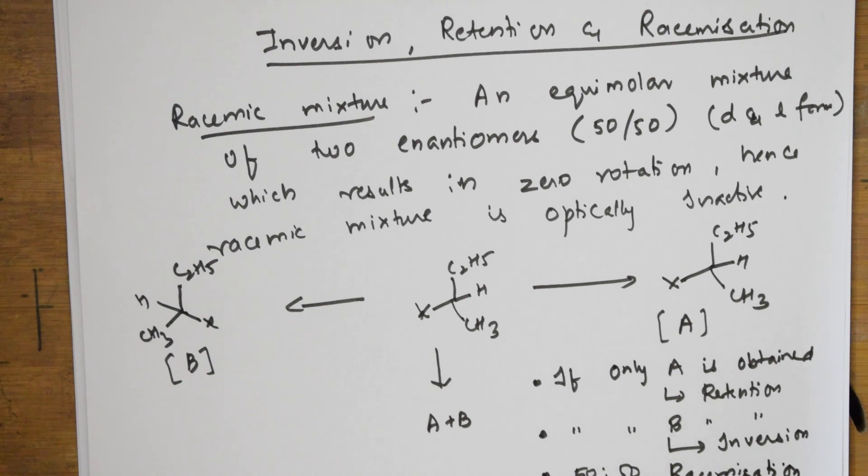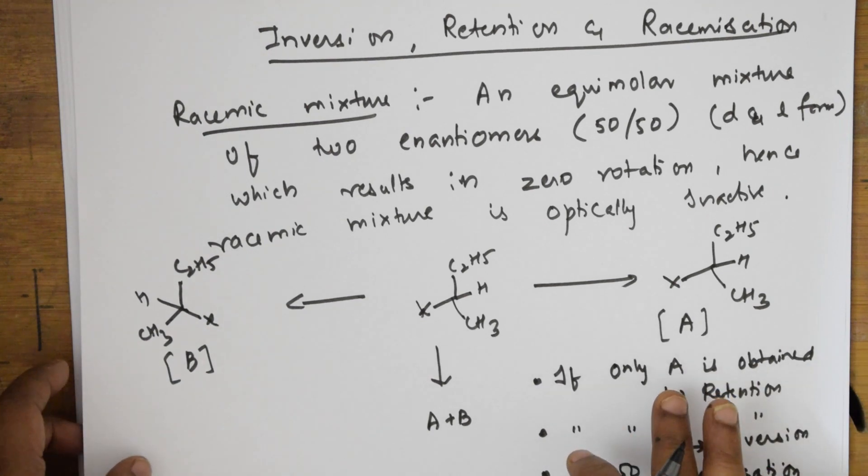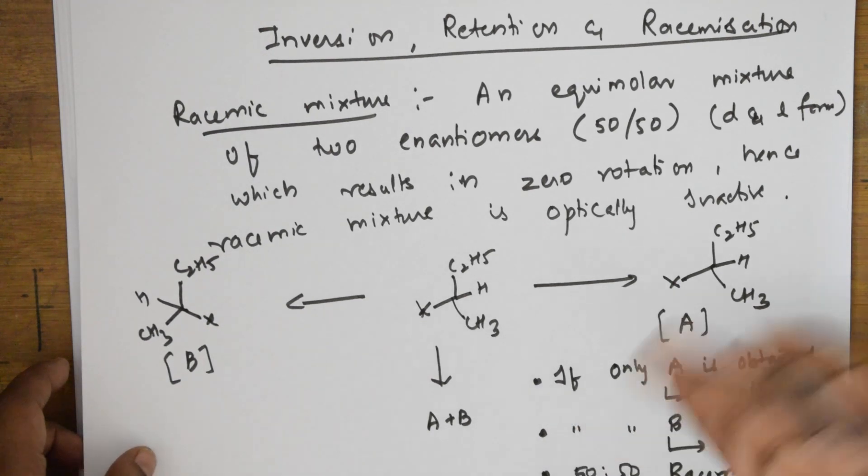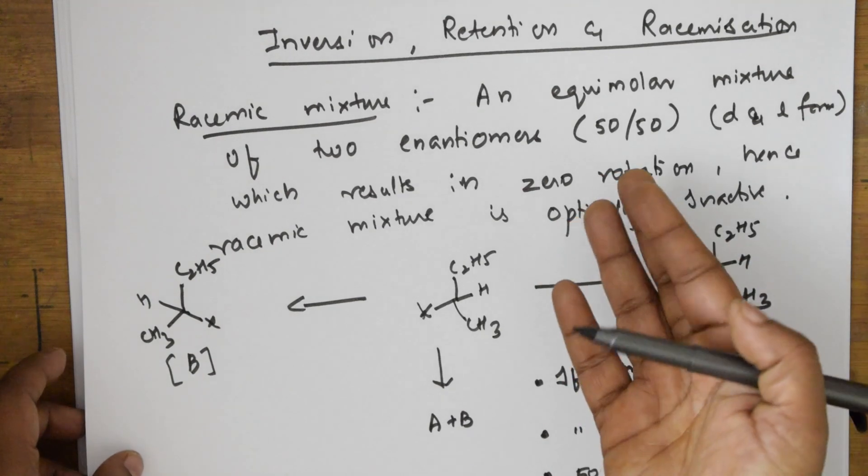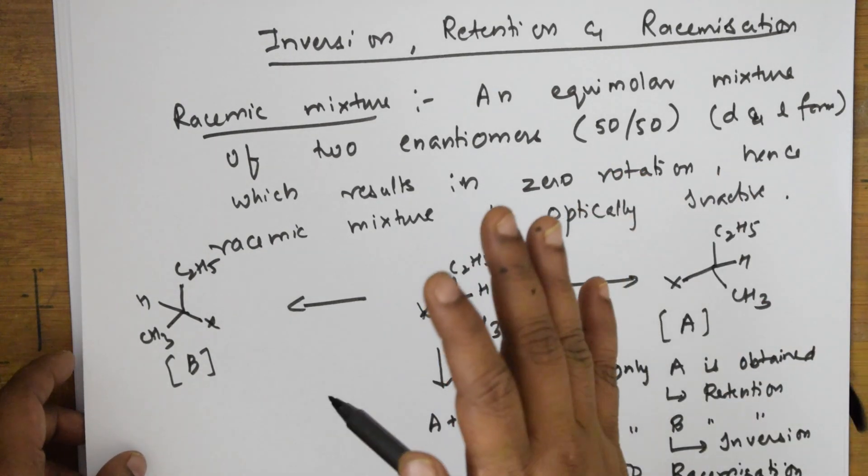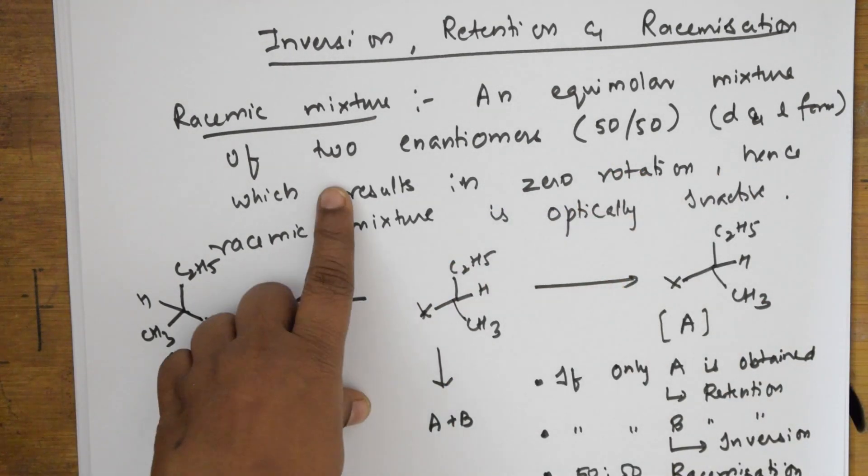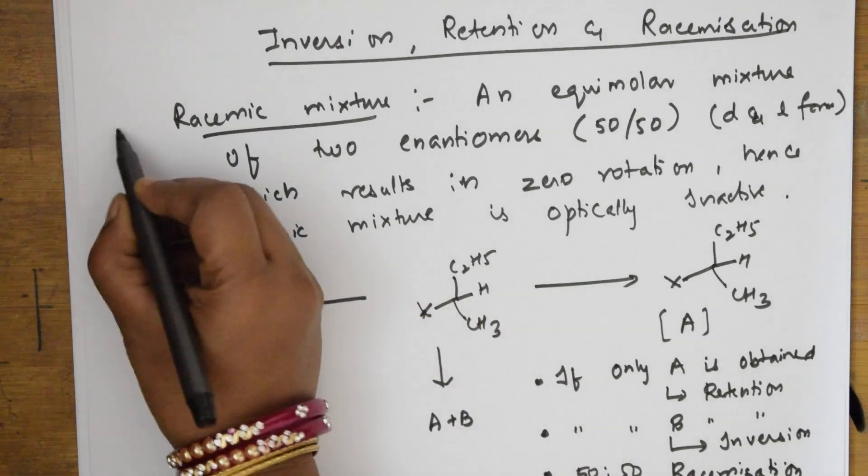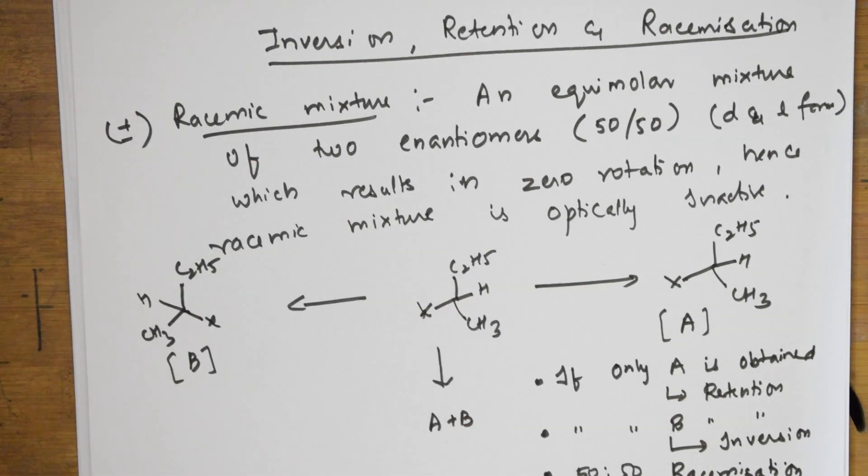This is your inversion, retention and racemization. I have taken this example from your NCERT. Important thing: racemization is the reverse of resolution, it is a conversion of plus or minus isomer into racemic mixture. We represent it by plus minus like this.